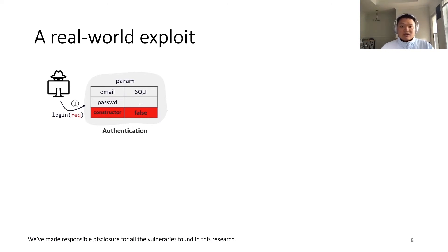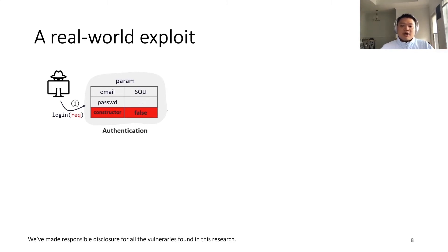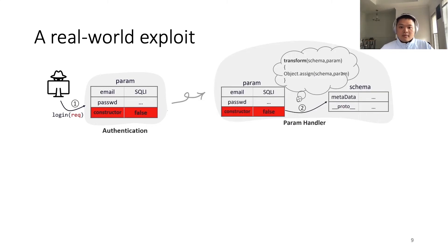To illustrate attack details, we use real-world vulnerabilities we found from Routing Controller, a popular web framework. We will attack its official code to demonstrate an end-to-end exploit, from security check bypassing to code injection. The first step is hidden property injection, where the malicious user includes an additional property during the login authentication procedure. As shown in the diagram, the attacker passes an additional property named 'constructor.' In the second step, the server program will perform a merge operation, putting every property of the parameter object into the schema object.